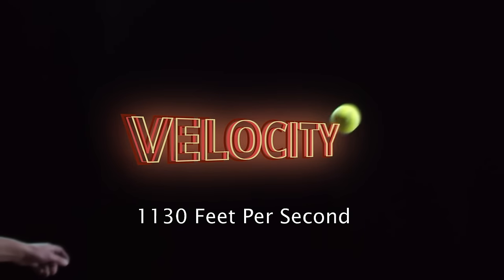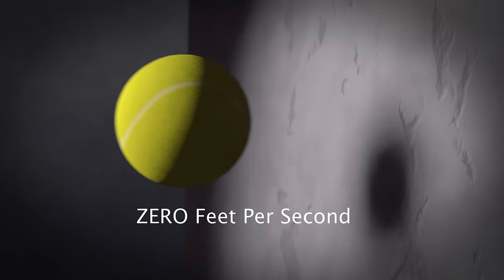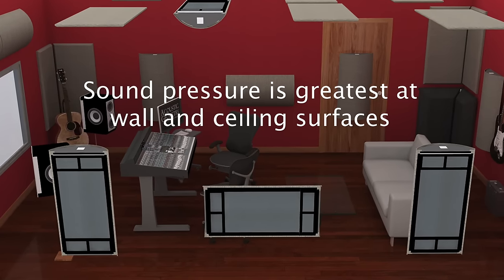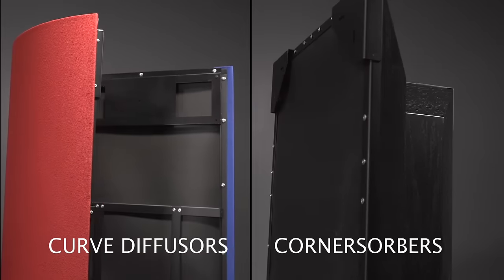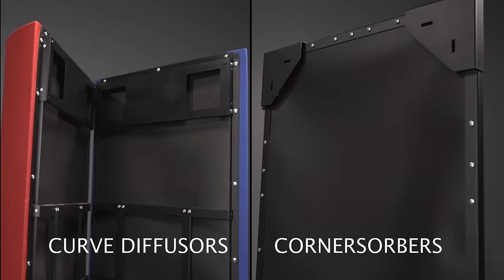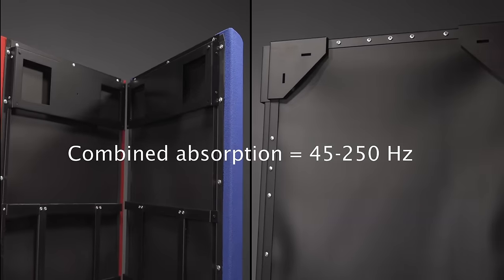The velocity of sound is 1,130 feet per second and zero feet per second at boundary surfaces. But that's where sound pressure is greatest, so that's where we place our membranes. Curved diffusers and corner sorbers have built-in membranes that work together to absorb 45 to 250 Hz.